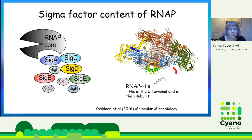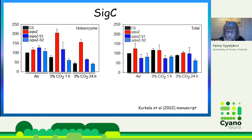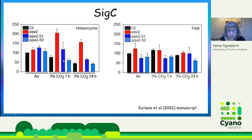To analyze which sigma factors form a holoenzyme with the core at a certain time point, we added a His-tag in the gamma subunit of RNA polymerase, then pulled down the whole complex and used Western blotting with specific antibodies to detect the amount of different sigma factors in the RNA polymerase holoenzyme. The sigma factor that showed clear differences was SigC. The total amount of SigC in different strains and conditions showed no difference, but in the holoenzyme: in the control strain, the amount of SigC goes down in high CO2; in the suppressor mutant lines it goes similarly down; but in the Delta-RPOZ strain, the amount of SigC in the holoenzyme goes up upon high CO2 treatment.